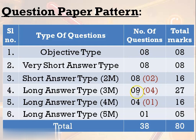There are 9 three-mark questions. For the 4-mark section we have 4 questions with internal choice for 1 question — there are 4 long answer type 4-mark questions. And also there is 1 five-mark question. This is our question paper pattern.